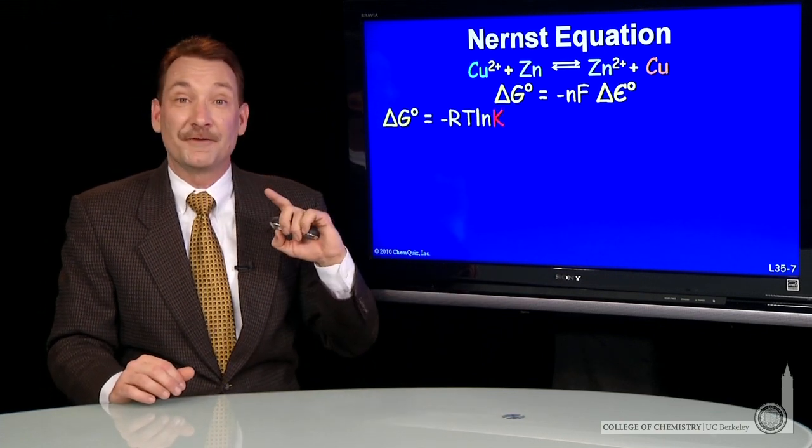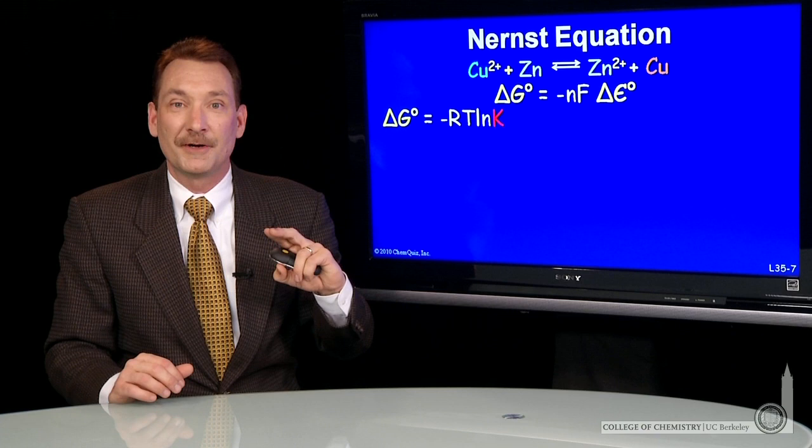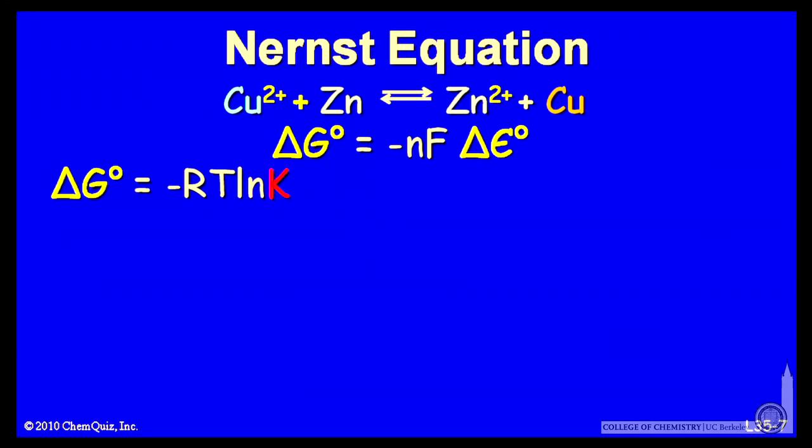But the standard state free energy difference is related to the equilibrium constant. So that means the standard cell potential must also be related to the equilibrium constant. And I can do a simple substitution here and show that lnK, the equilibrium constant, is equal to nF standard cell potential over RT.